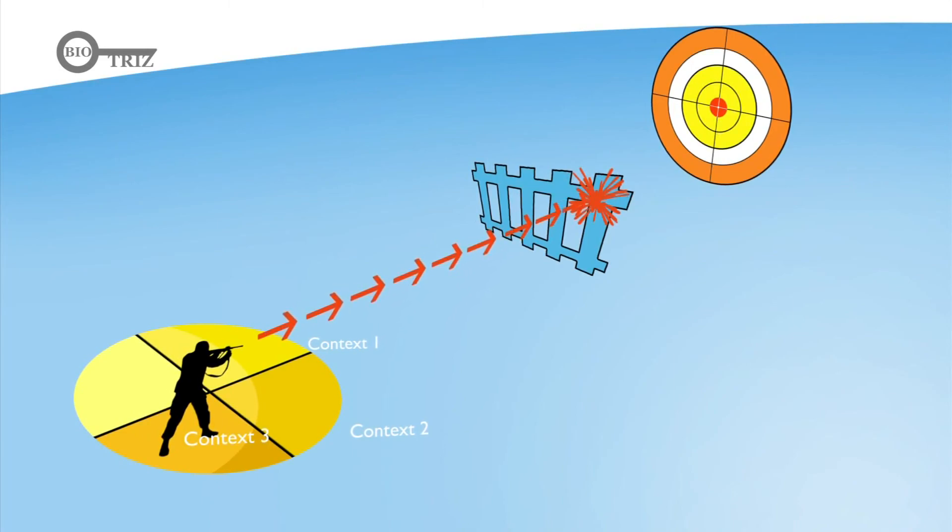When we hit an obstacle on our way to the goal, we say, here is a problem. There are also contexts under which your problem might not even arise at all.